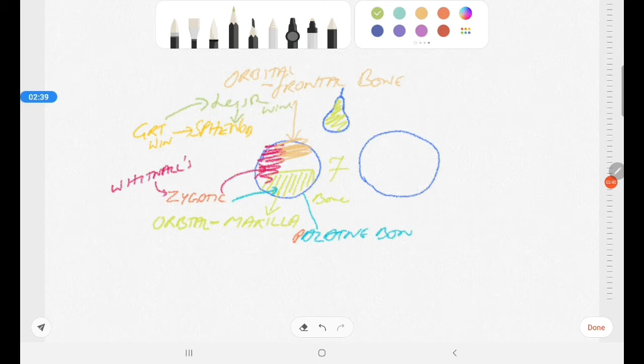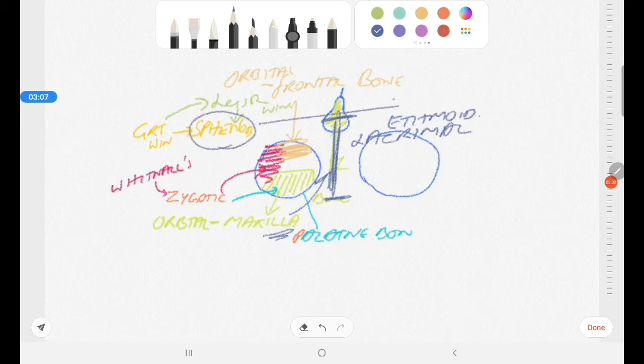Coming to the medial wall, the medial wall has contributions from so many bones of which one is the maxilla. Along with that towards the posterior end we have the lacrimal bone. We have the ethmoid bone and we also have the sphenoid bone.